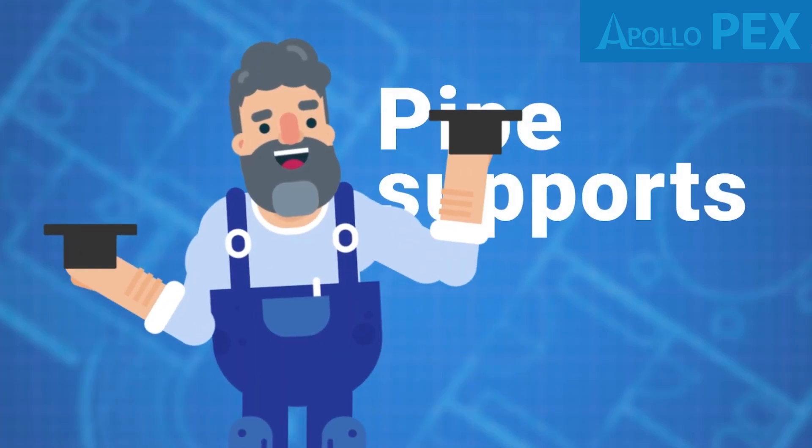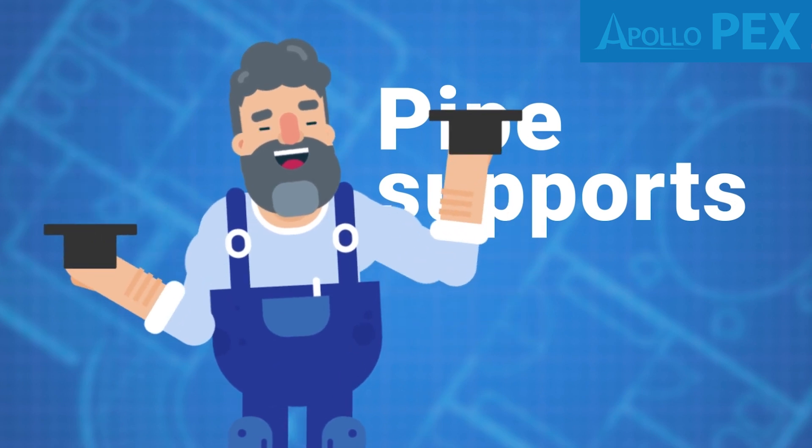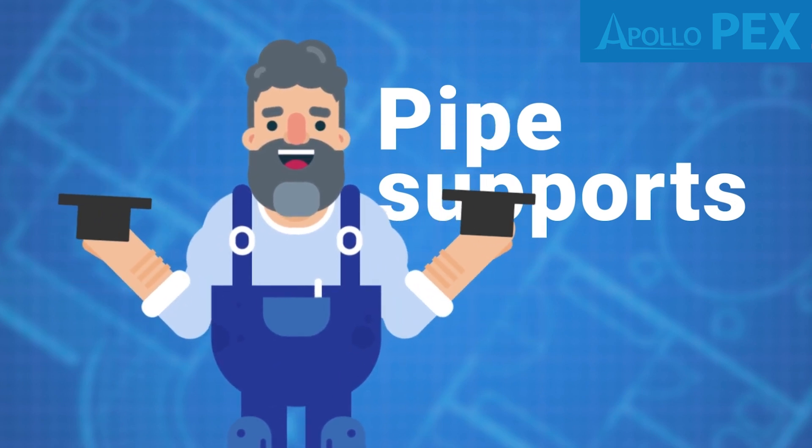Pipe supports were created to support the weight and orientation of pipes as they travel throughout a project. Most were created for use with studded walls and joists.